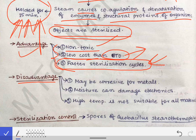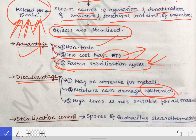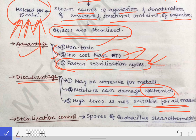The disadvantages: first, it uses moisture, which may be corrosive to metals, so metallic instruments should not be sterilized by autoclave as it may damage them. Second, moisture can damage electronics, so electronic equipment cannot be sterilized by this technique. Third, the high temperature is not suitable for all materials, so temperature-sensitive items should not be sterilized by this method. Despite all these disadvantages, autoclave is the most commonly used sterilization technique.